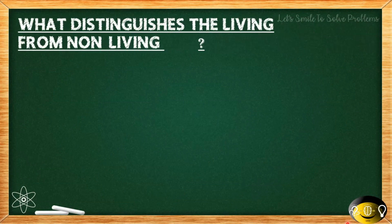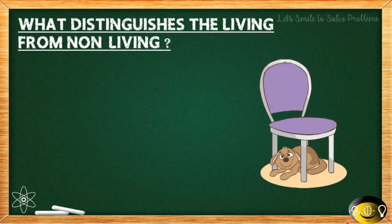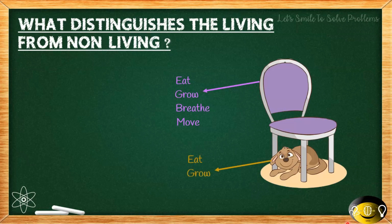The next sub-topic of what is biology is: what distinguishes the living from the non-living? Using the example of a chair and a dog — a chair can't eat, can't grow, can't breathe, and can't move on its own. But a dog can eat, grow, breathe, and even reproduce.